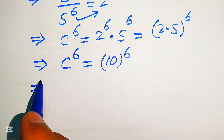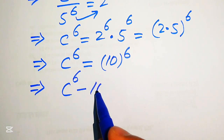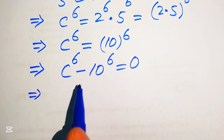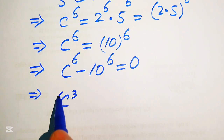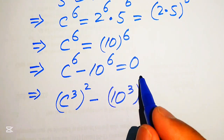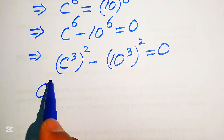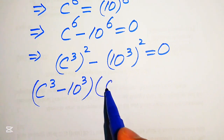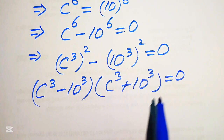Now we move 10 to the power of 6 to the left hand side, giving C to the power of 6 minus 10 to the power of 6 equals 0. We convert these two sixth-power terms into squared form: C cubed whole squared minus 10 cubed whole squared equals 0. Applying the algebraic difference of squares formula, we write this as C cubed minus 10 cubed times C cubed plus 10 cubed equals 0.